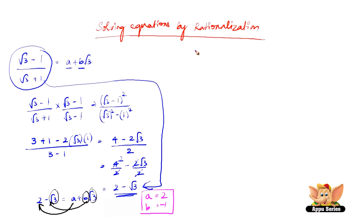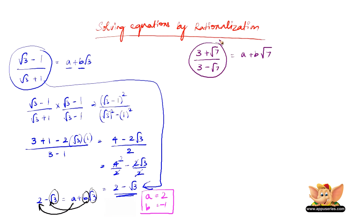Let us do another example: (3 + √7) / (3 - √7) = a + b√7. Similarly, we first have to simplify or rationalize this. We multiply (3 + √7) / (3 - √7) by the rationalizing factor (3 + √7) / (3 + √7).